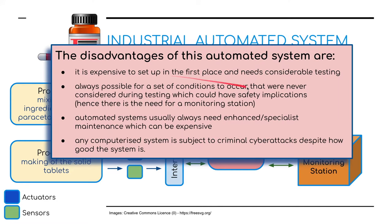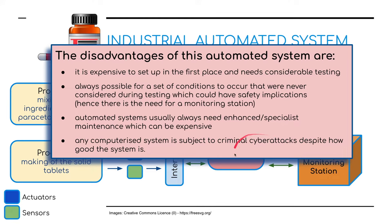The disadvantages: it is expensive to set up in the first place and needs considerable testing. It's always possible for a set of conditions to occur that were never considered during testing, which could have safety implications — hence the need for the monitoring station. Automated systems usually need enhanced specialist maintenance, which can be expensive. And if it's computerized and on the internet, it's susceptible to cyber attacks and hacking.